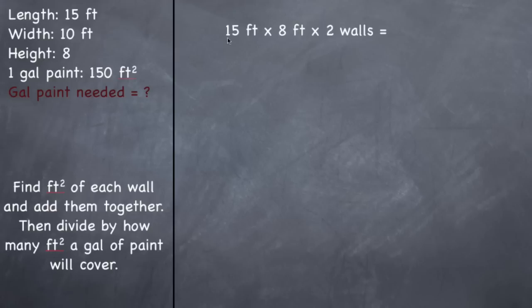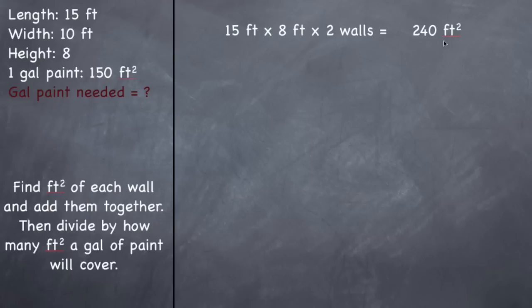This room is 15 feet long, and there are two walls at that length. The walls are 8 feet high. So we multiply 15 feet times 8 feet — feet times feet gives you square feet — then times two walls.